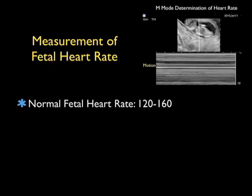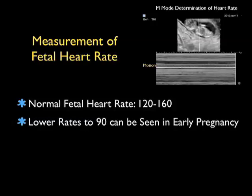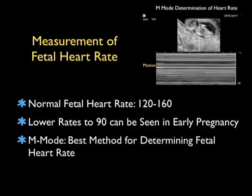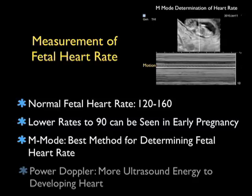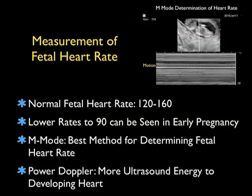In addition to measuring the gestational age of the fetus, another very important concept is to get a measurement of the fetal heart rate. Normal fetal heart rates will range from 120 to 160 beats per minute, but lower rates down to 90 beats per minute can be seen in early pregnancy in the early parts of the first trimester. M-Mode is the best method for determining fetal heart rate. Power Doppler, in contrast, gives more ultrasonic energy to the developing heart. Thus, M-Mode is the preferred way of measuring the fetal heart rate at this time.